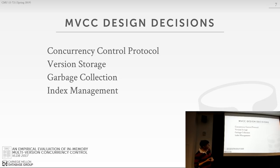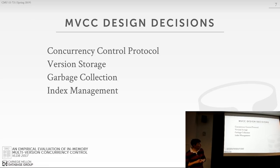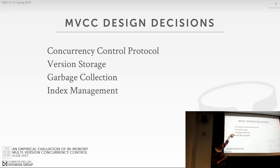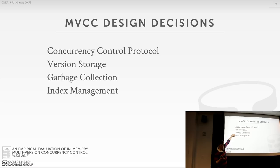The four design decisions we're going to focus on today are: the concurrency control protocol and coordination method to keep track of what transactions are allowed to read what; version storage, which turns out to be the most important; garbage collection; and index management. Next class will focus more on modern implementations of the concurrency control protocol for MVCC, and the class after that will go into more detail on different types of garbage collection.